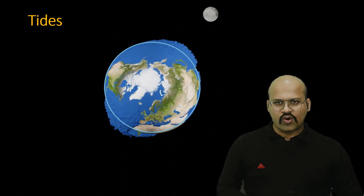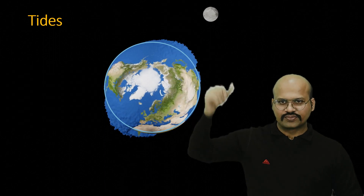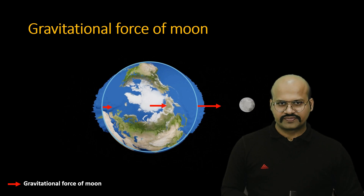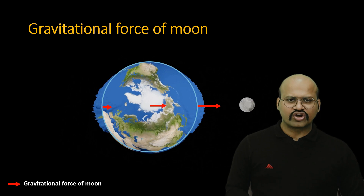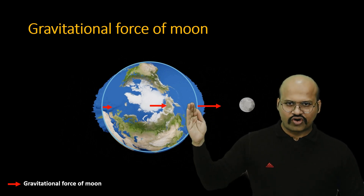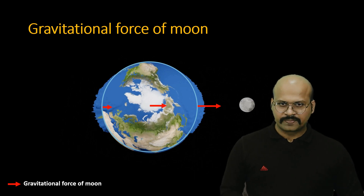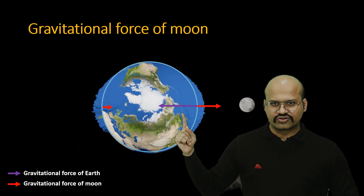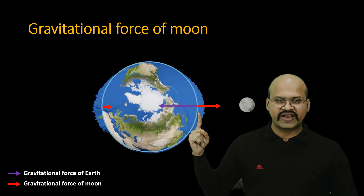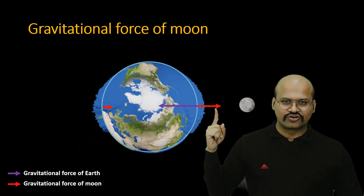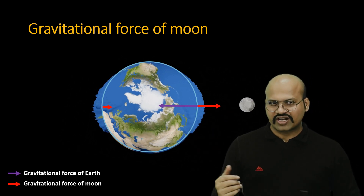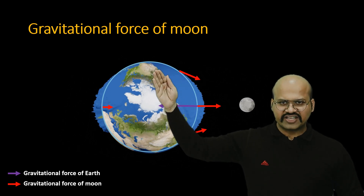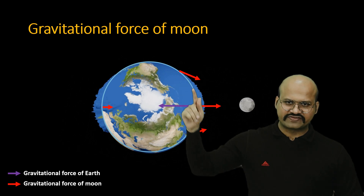We will first understand why a tidal bulge is seen on the side facing the moon. The moon applies a gravitational pull — shown in red — which is maximum at the point closest to the moon and decreases with distance. Normally we might believe the water level rises directly due to this gravitational pull, but that is not true. The earth's gravitational force is thousands of times stronger than the moon's gravitational force, so the moon cannot directly pull the water up.